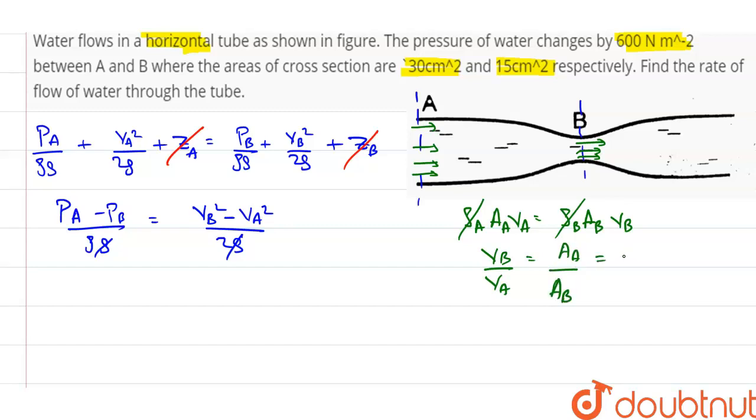Putting the values of the areas of cross-section, at A it is 30 cm square and at B it is 15 cm square. So, this becomes equal to 2. This implies V_B is equal to 2 V_A.